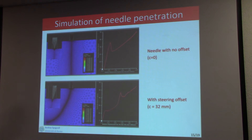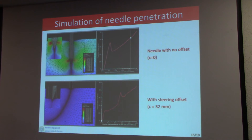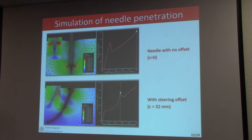An animation gives a good idea of what is happening in the simulation. In the case of a symmetric needle with zero offset, the algorithm produces a vertical needle trajectory with no prescribed path. For the 32 mm offset case, there is also no prescribed path, but the needle follows a curved path in the direction expected.